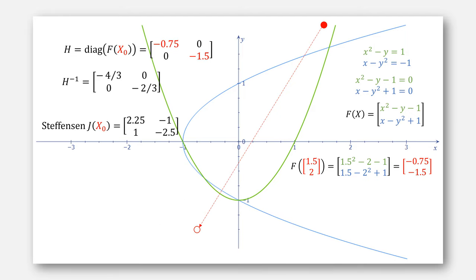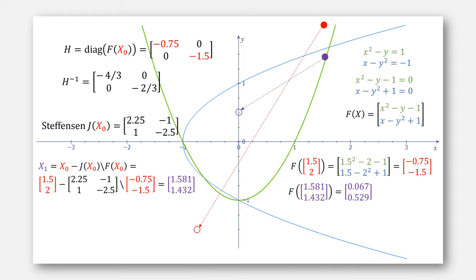Then we apply Newton's method using that approximated Jacobian, resulting in the value of 1.58 and 1.432, looking like this when we plug everything into F.